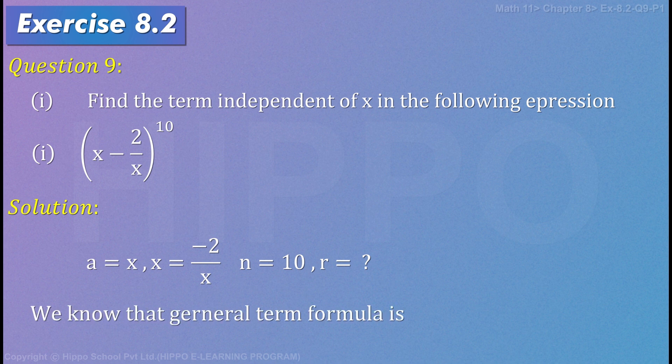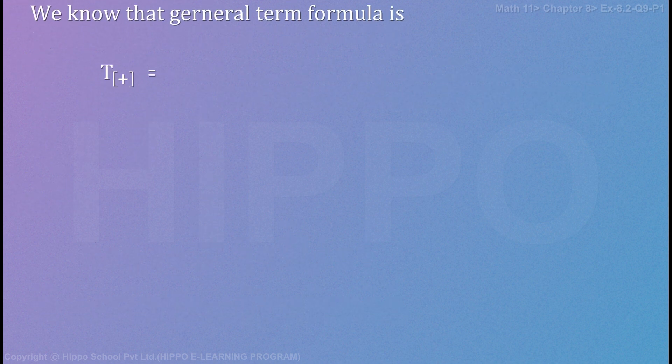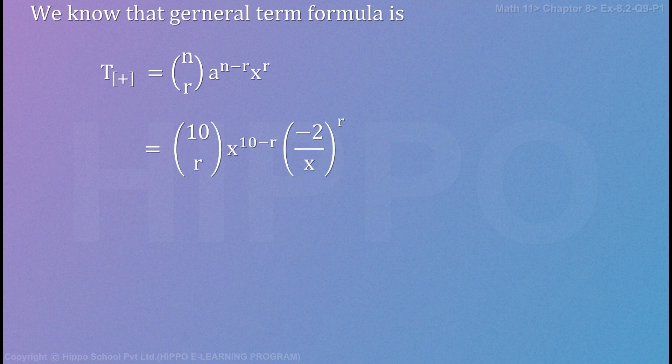We know the general term formula is T subscript r plus 1 equals to nCr a to the power n minus r x to the power r. We know r ki value find root kerna hai. n kya hai 10. To licking equals to 10Cr, a kya hai x. X ki power 10 minus r, x ki x kya hai minus 2 by x ki power r, which is equal to 10Cr x ki power 10 minus r minus 2 ki power r. Upper separate kerlienge, divide me x ki power r separate kerlieta hai.